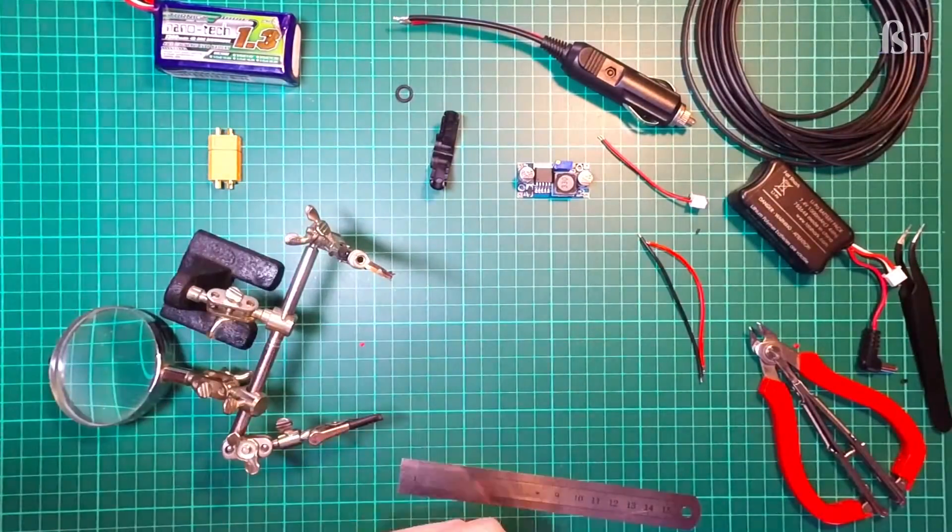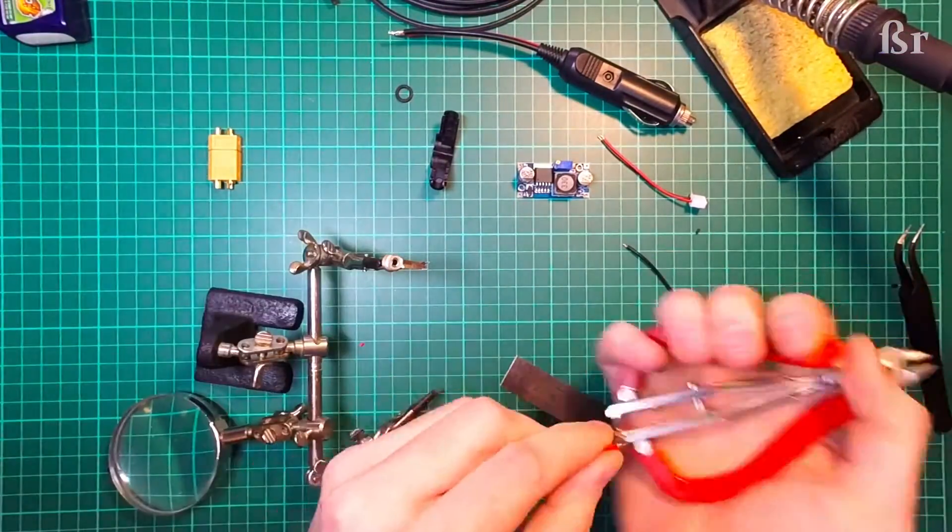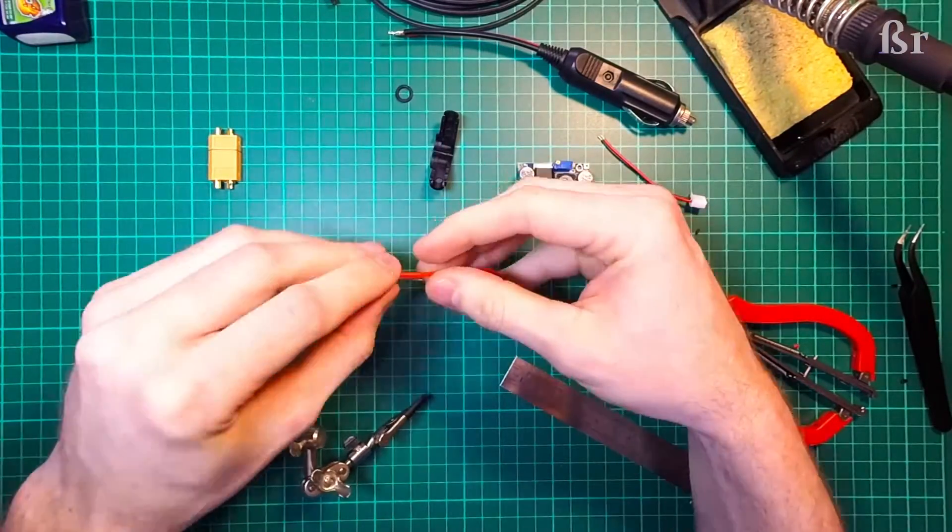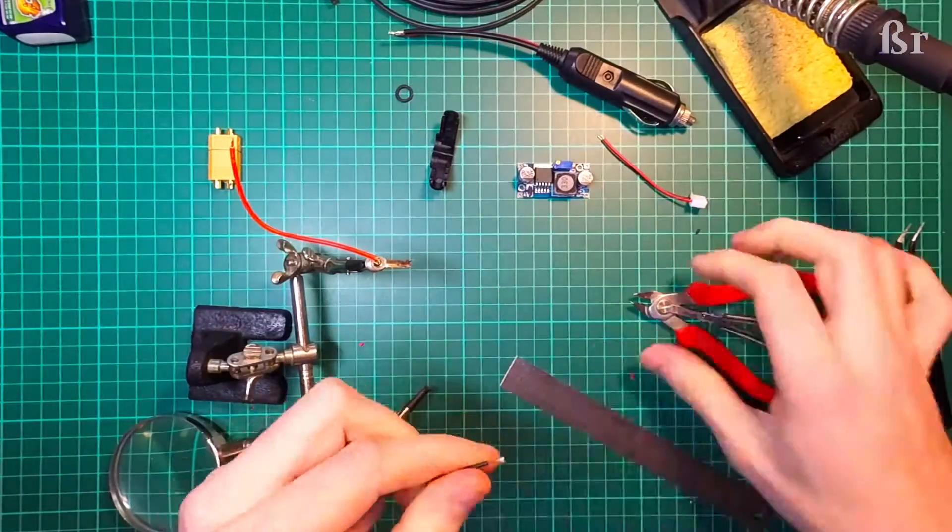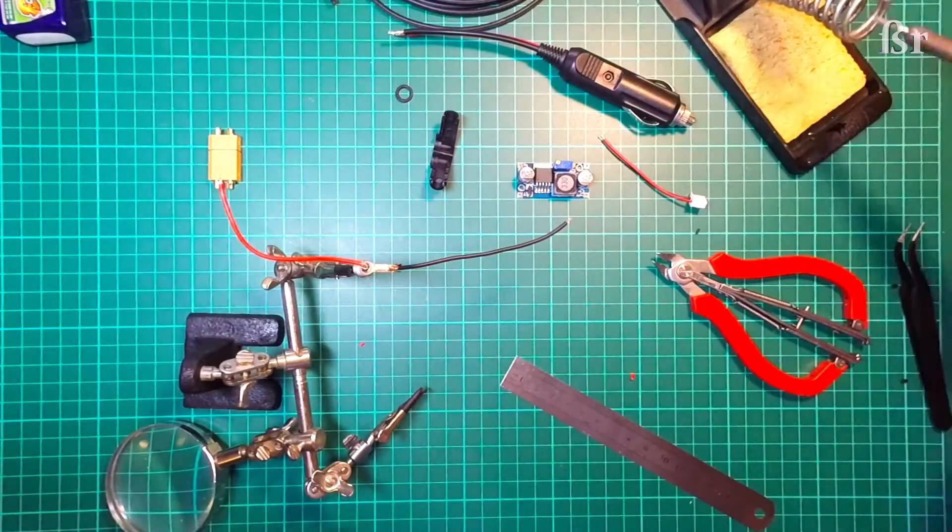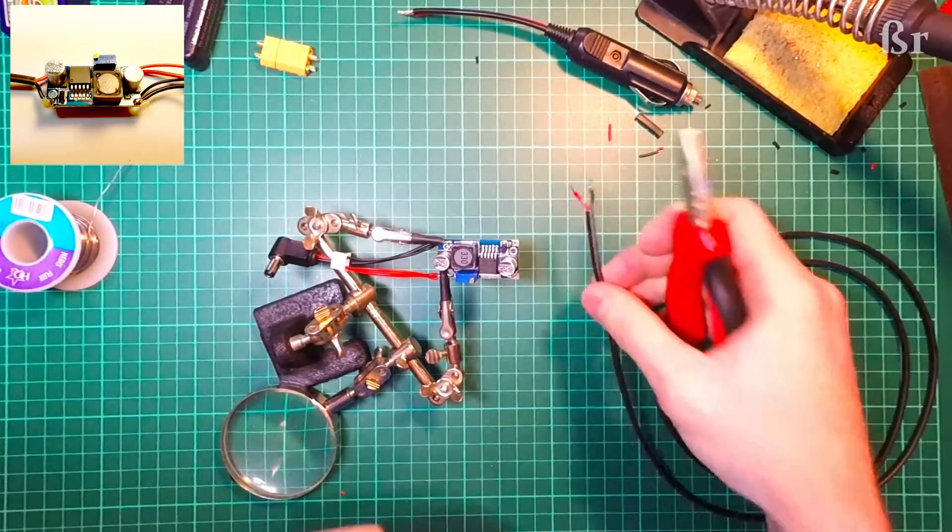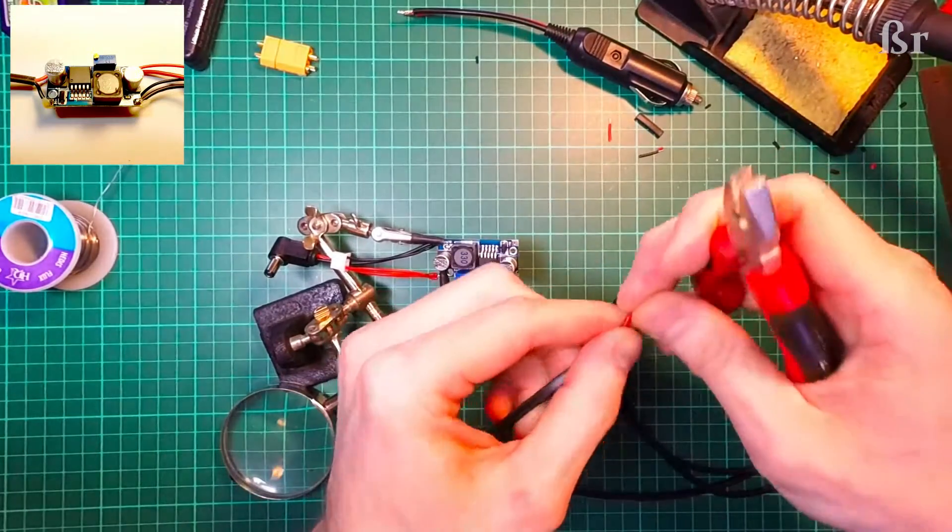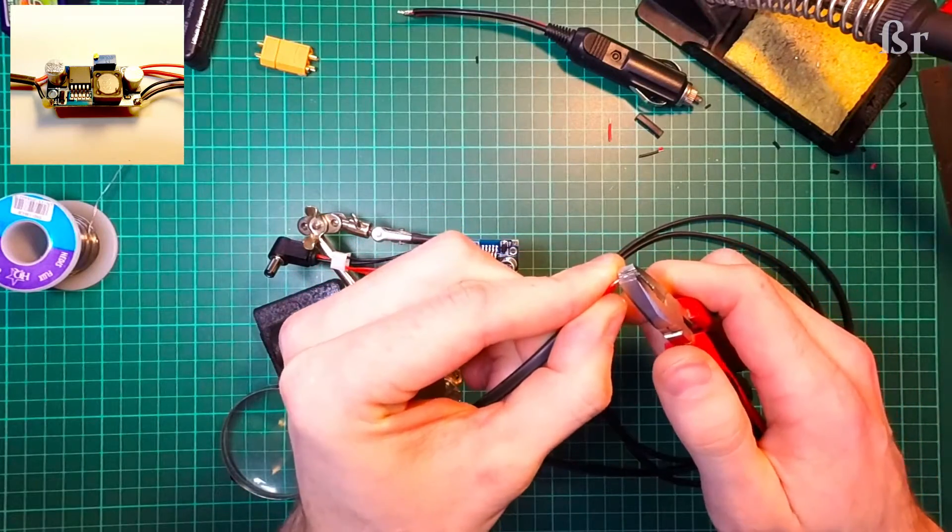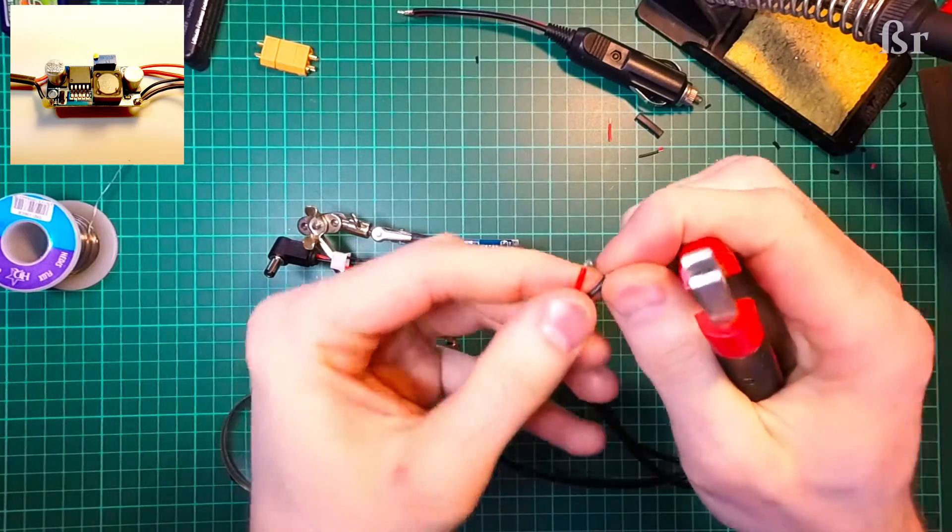I'm going to take the DC inline jack, which is a male jack between about 9 and 12 millimeters in length. This is a 2.1 by 5.5 millimeter right-angled jack. I'm going to solder the out power from the buck converter through to that center pin, so that the center pin is supplying the positive voltage to the goggles and then the ground cable is going to go to the outside of that.